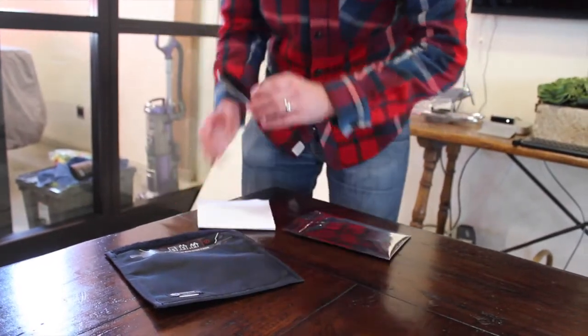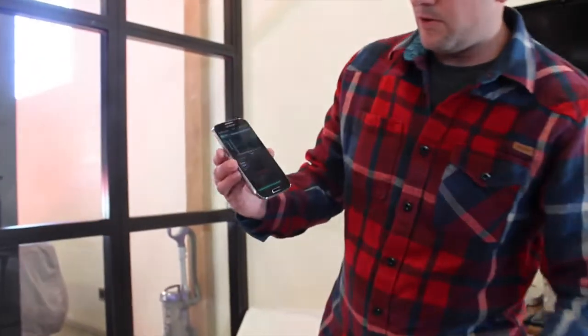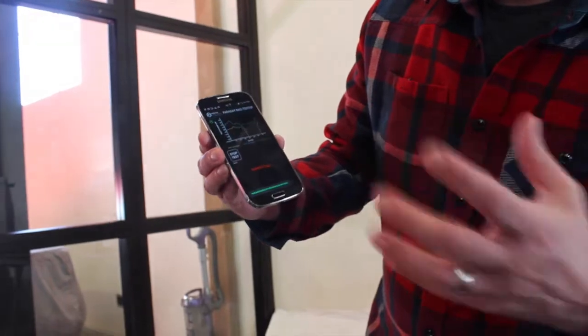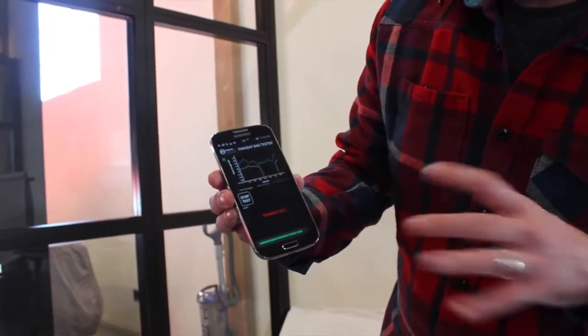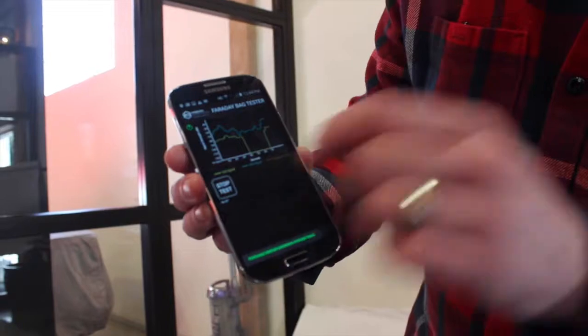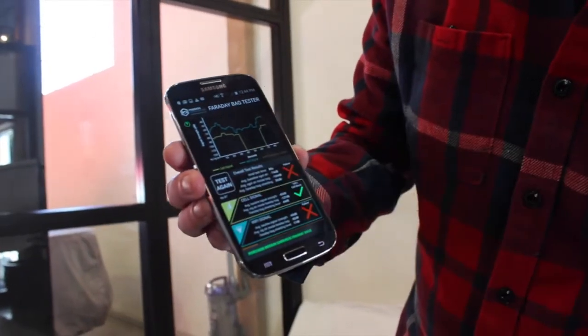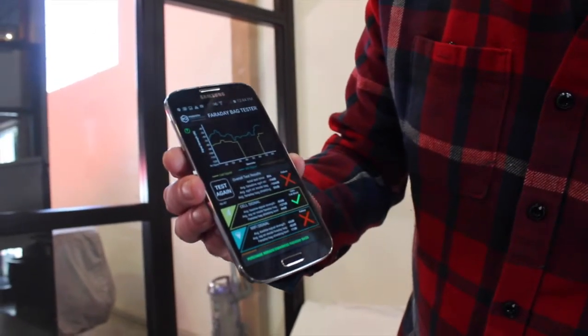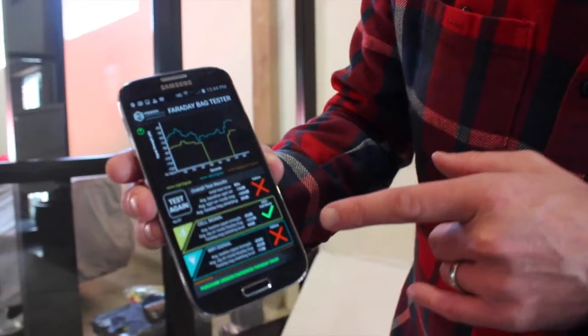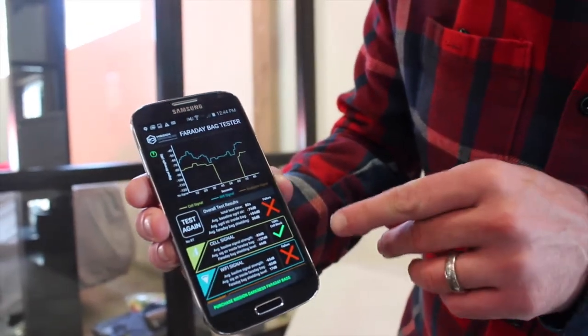Okay, so we let the phone run its course for a little bit, but as you can already see those dips there. I'm going to stop the test. So basically what you're able to see is this bag was able to cut out the cell signal.